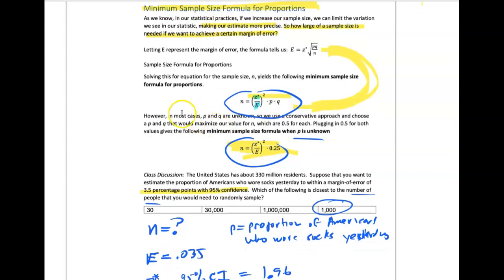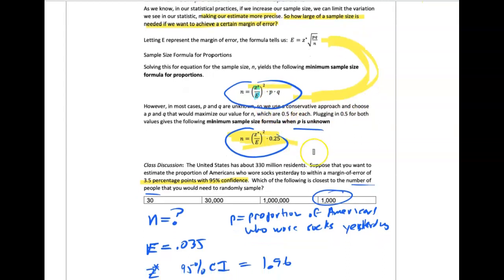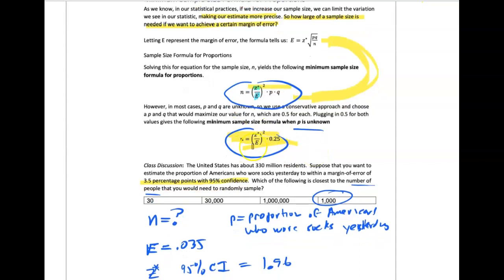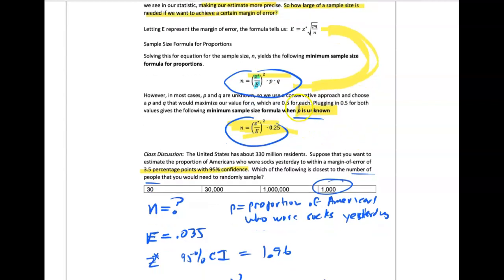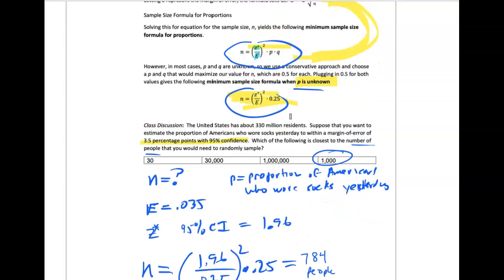Now, P and Q in most cases are unknown. So what happens is you just use 0.50 for each. When you do 0.50 times 0.50, you get 0.25. That's the formula you use ahead of time because we rarely know what P is, so we use that estimate.